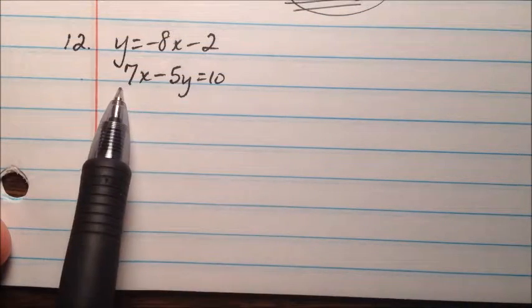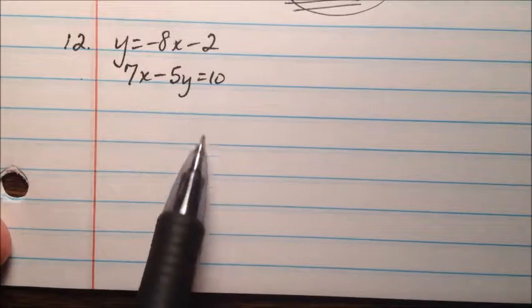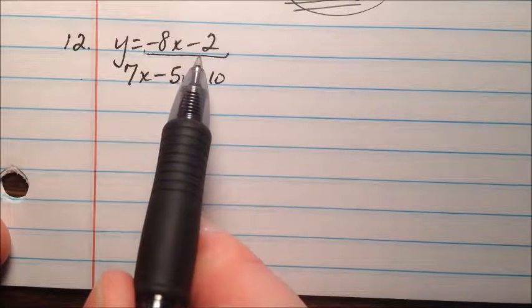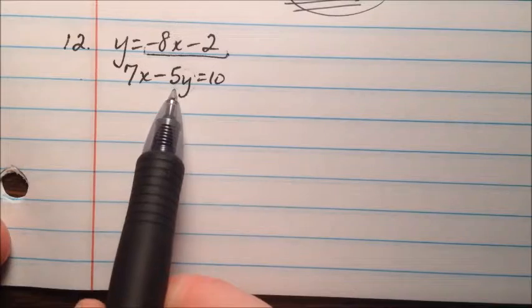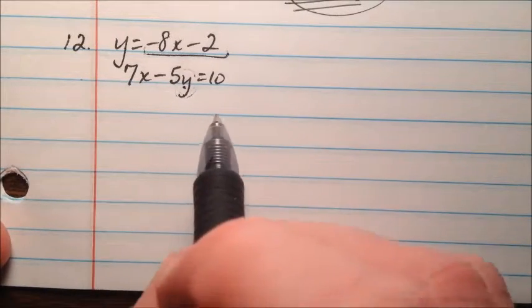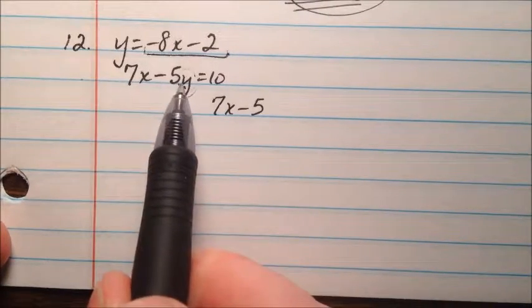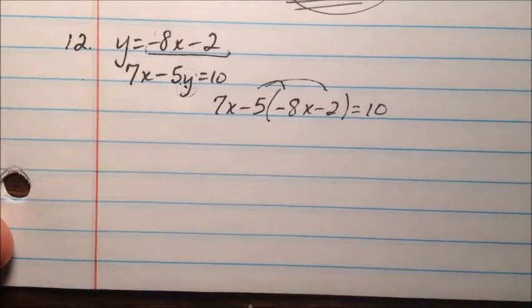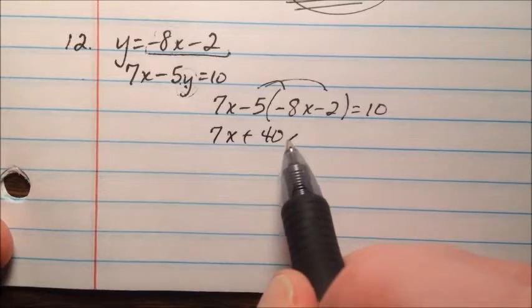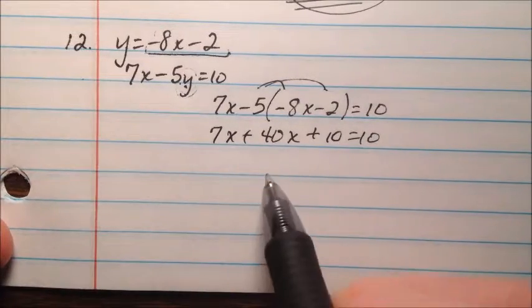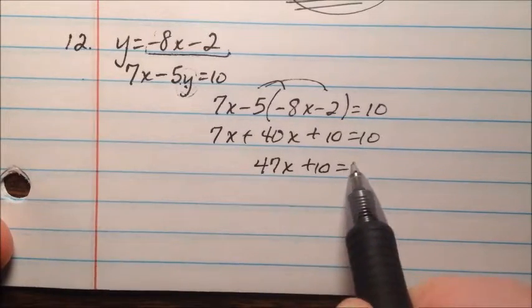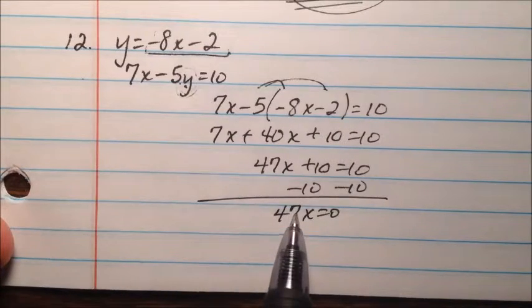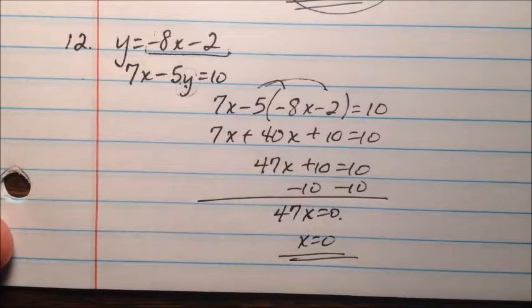For number 12 we have y equals negative 8x minus 2, and then 7x minus 5y equals 10. Since y equals negative 8x minus 2, we substitute that expression for y in the other equation: 7x minus 5 times the quantity negative 8x minus 2 equals 10. Using the distributive property, we get 7x plus 40x plus 10 equals 10, so 47x plus 10 equals 10. The 10s cancel, leaving 47x equals 0, so x must equal 0.